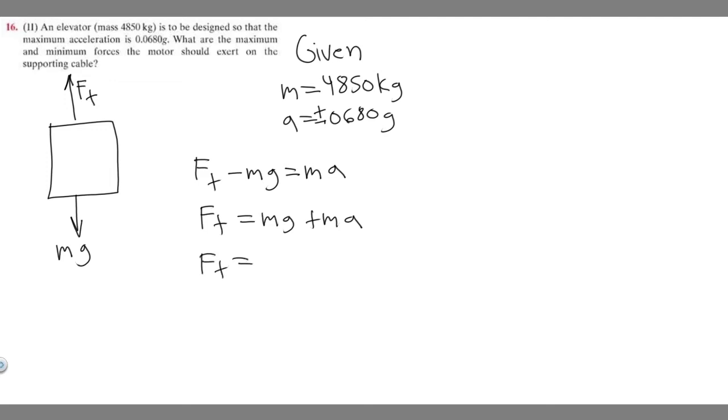We can factor out an m, so F_T equals m times (g + a). You might see this formula; it's pretty common too.